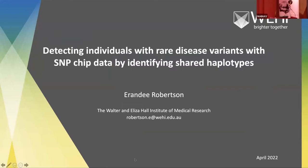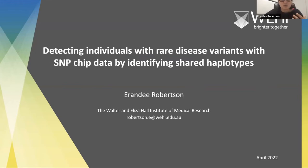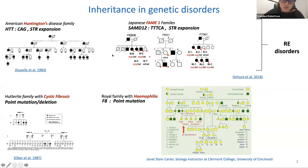Thank you. I'll be taking you through a bioinformatic tool we developed to detect individuals with rare disease variants using SNP chip data. A good portion of genetic diseases are inherited — you can see how multiple generations are affected with diseases like Huntington's, Cystic Fibrosis, or Hemophilia.